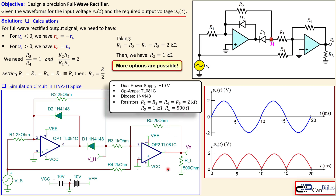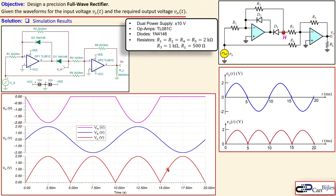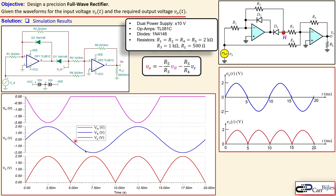Now let's look at the simulation results. The plot shows VH, which is the output of the precision half wave rectifier. You can see it is inverted and rectifies the first part, but does not pass the second half of the period — showing the effect of only the precision half wave rectifier. The input VS and the output VO are also shown, and VO is exactly as we wanted.